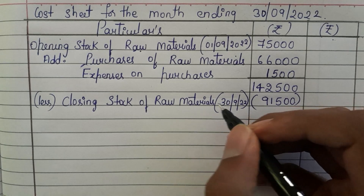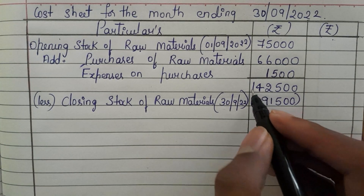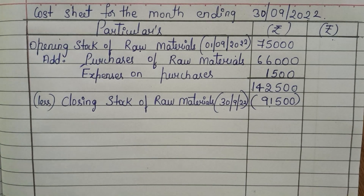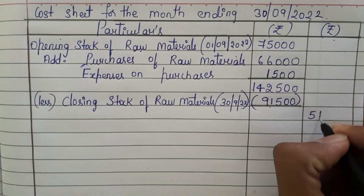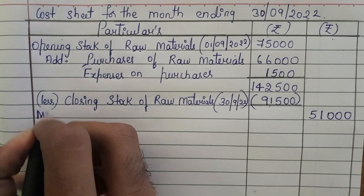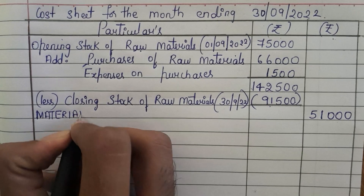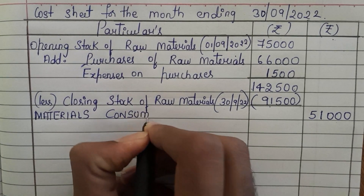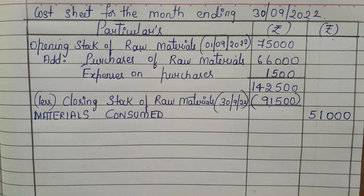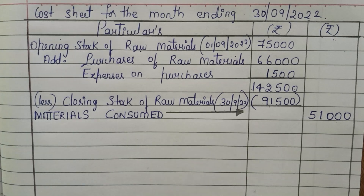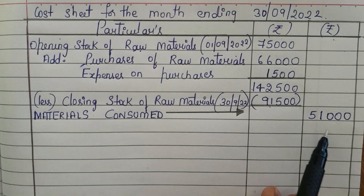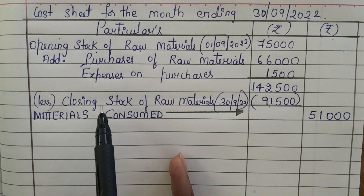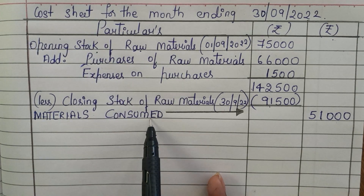The closing stock of raw materials as on 30th September 2022 is 91,500. So you subtract: 1,42,500 minus 91,500 gives you 51,000. This is nothing but the materials consumed. In the previous two problems, materials were given directly, but in this question they have given opening stock and closing stock, so we need to calculate materials consumed ourselves.